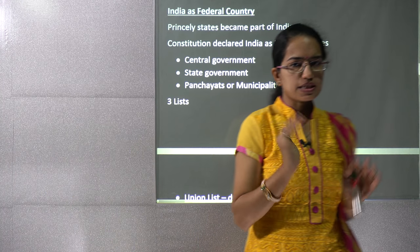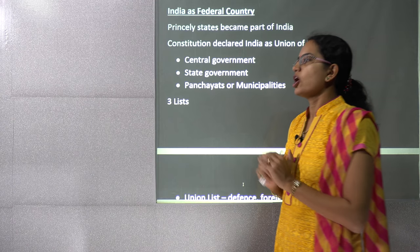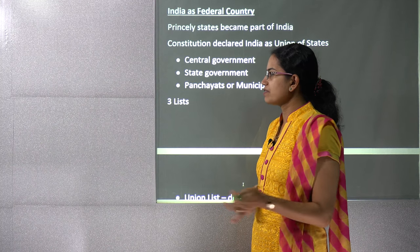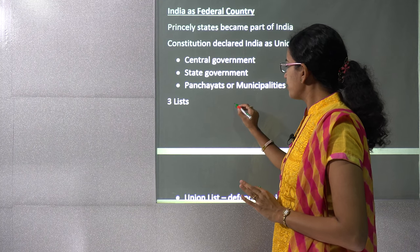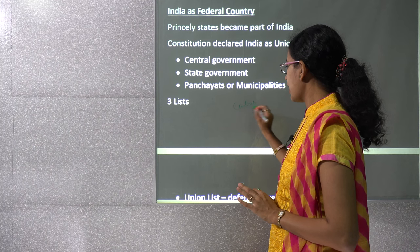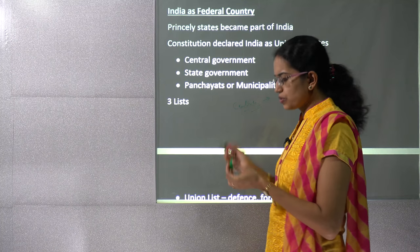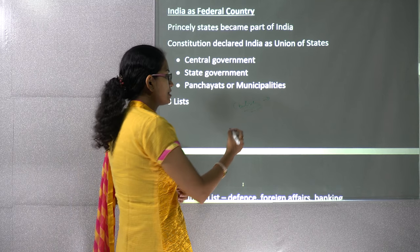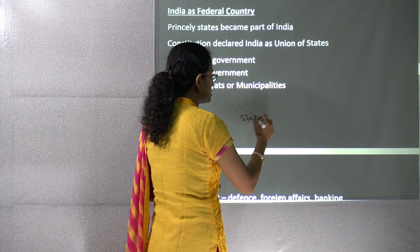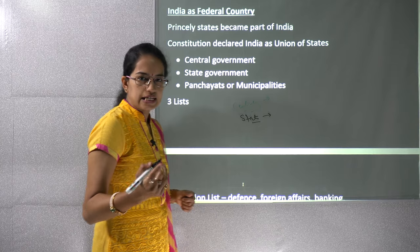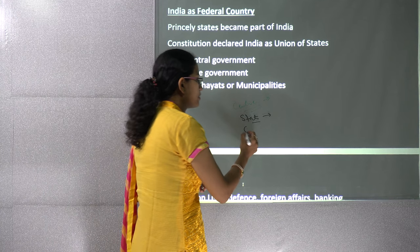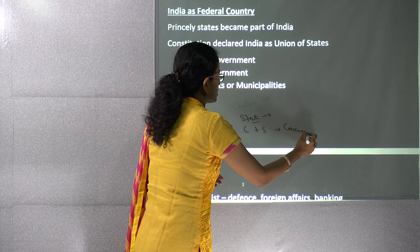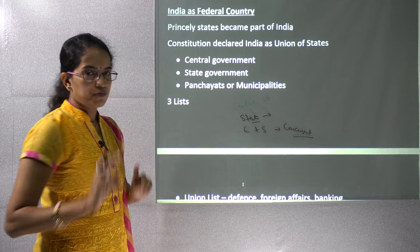Now let's come to India, the major section of our study. In India, we have a division of powers at three levels. All powers that reside with the center are in the union list. Powers with the state fall under the state list. Powers equally divided between center and state go into the concurrent list.